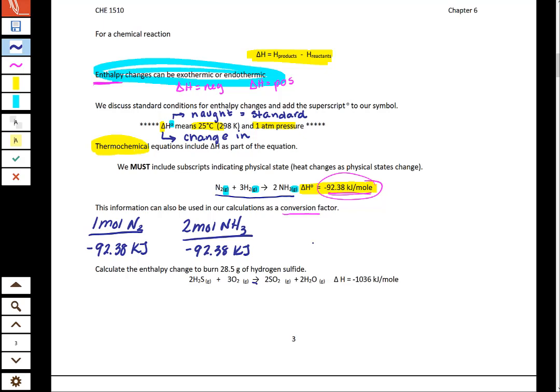We could say for every three moles of hydrogen there are 92.38 kilojoules of heat released. All of these conversion factors are something that you can pull from this thermochemical equation, and you can also flip all of them depending upon what you need to cancel out.